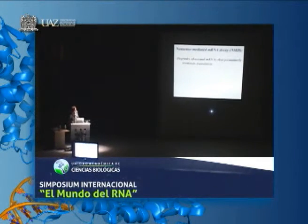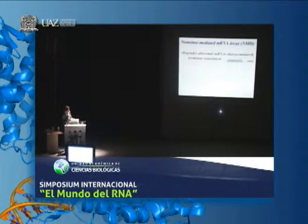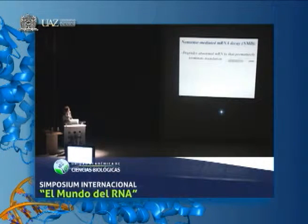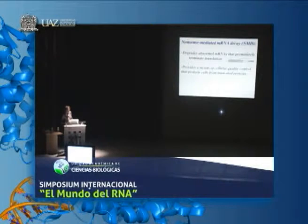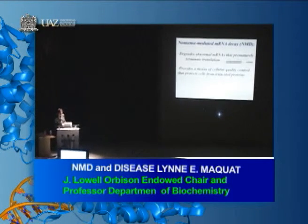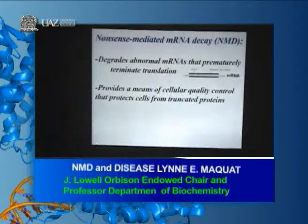NMD primarily degrades abnormal mRNAs that prematurely terminate translation. What I've drawn here is a picture of a generic human mRNA. It has a cap at the 5-prime end, a poly-A at the 3-prime end. Translation initiates at an AUG initiation codon and generally terminates in the last exon of the mRNA. A premature termination codon would reside anywhere between the AUG initiation codon and the normal termination codon. NMD provides one of a number of ways by which cells control the quality of gene expression.